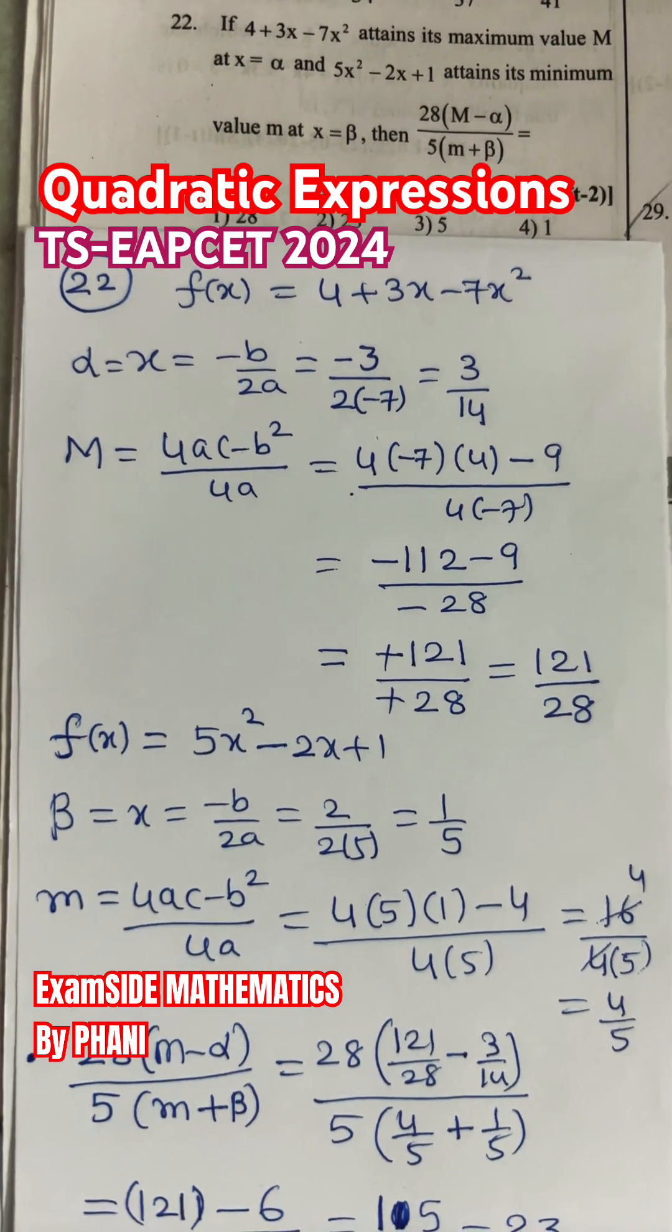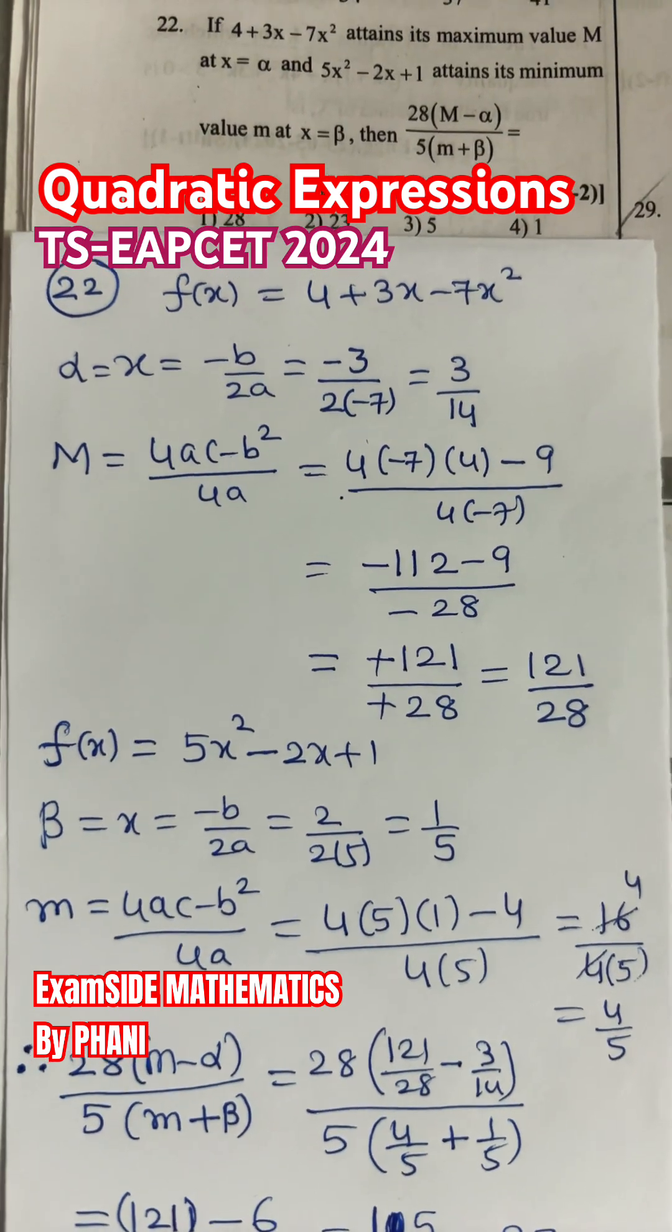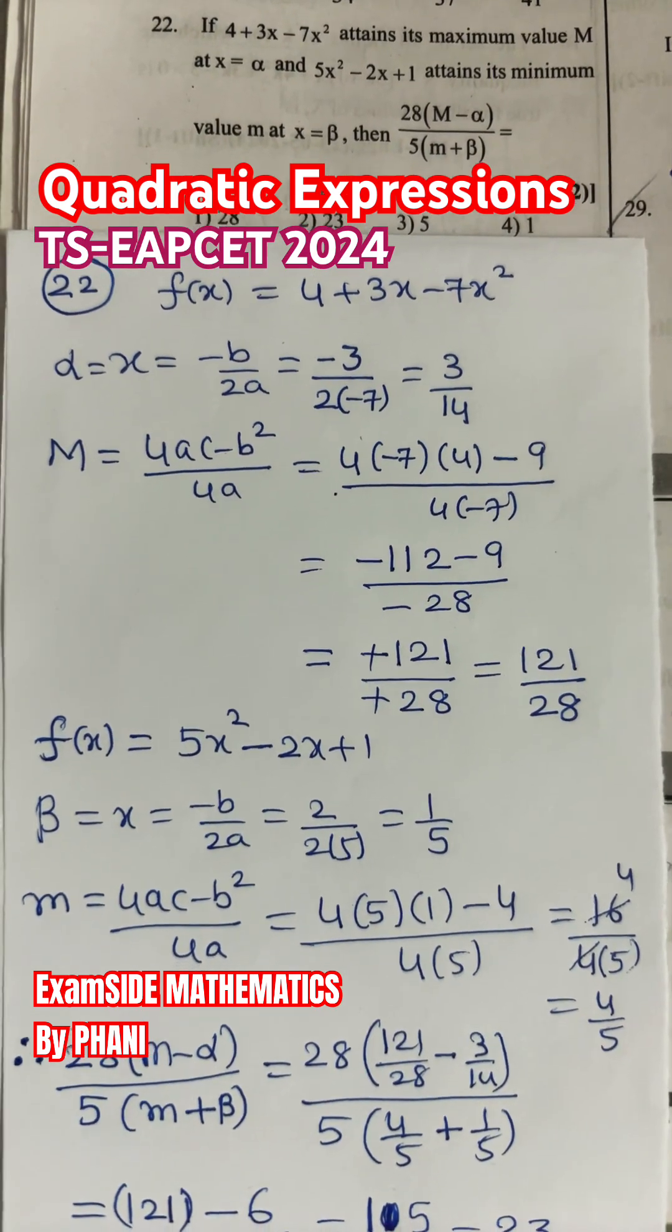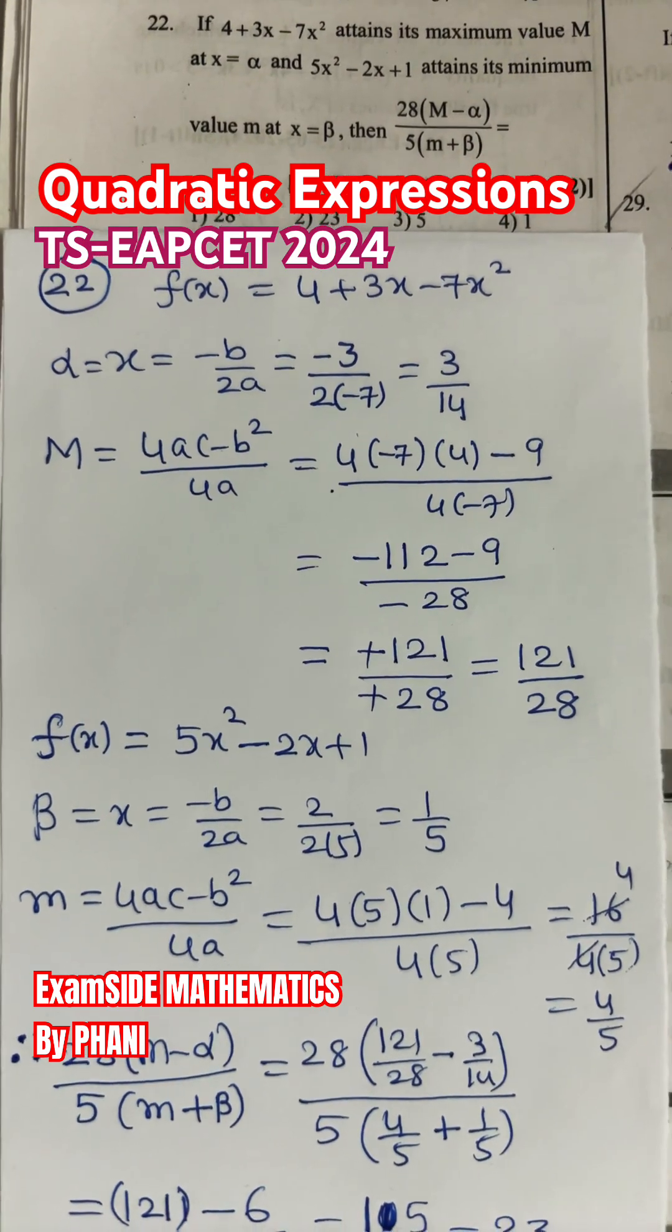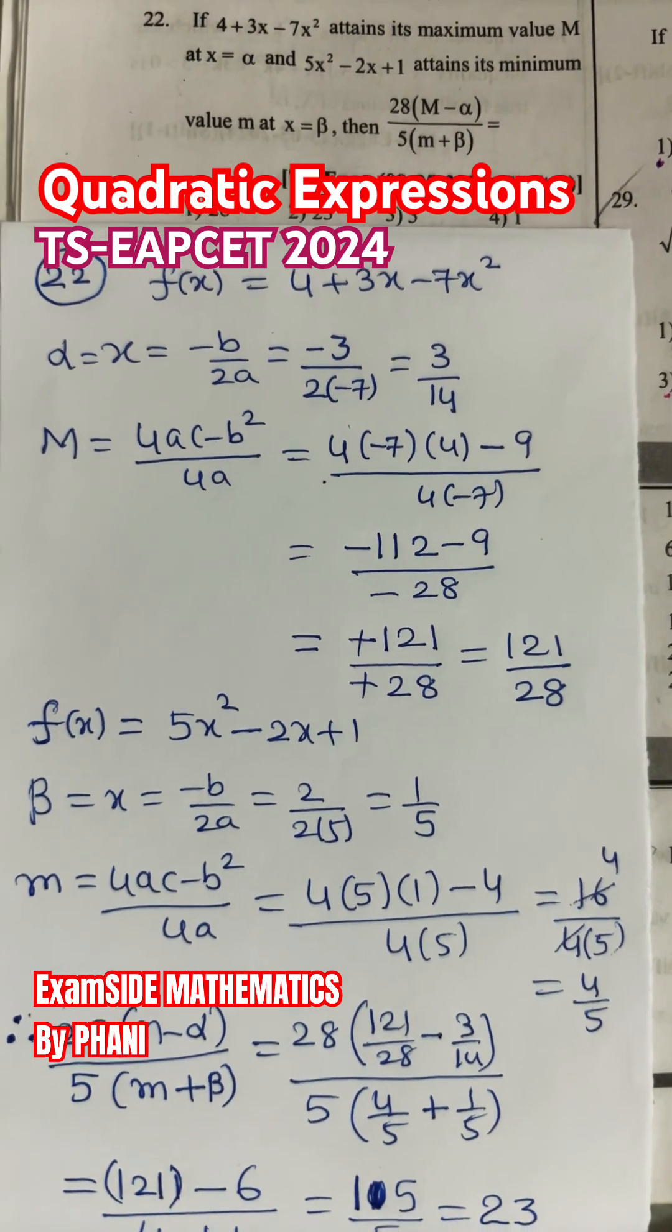So small m is minimum value = (4ac - b²)/4a. Substitute the respective values from the second quadratic expression and simplify, you will get it as 4/5.